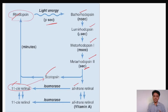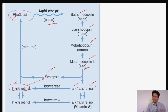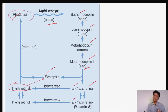After some time, all-trans retinal converts back to 11-cis retinal, which combines with scotopsin to reform rhodopsin. All-trans retinal can also be converted to all-trans retinol — these are isomer forms — and all-trans retinol is nothing but vitamin A.